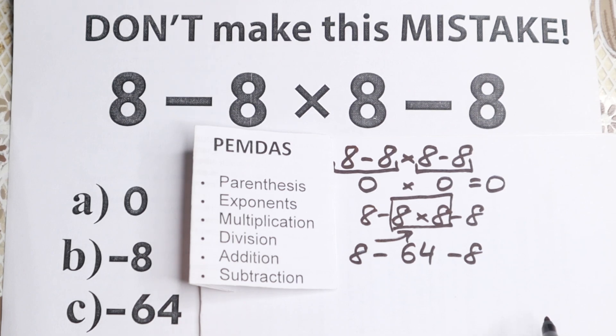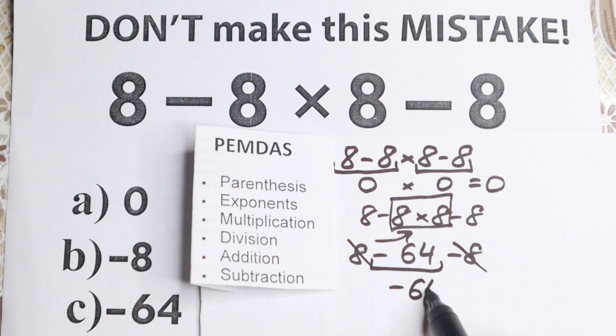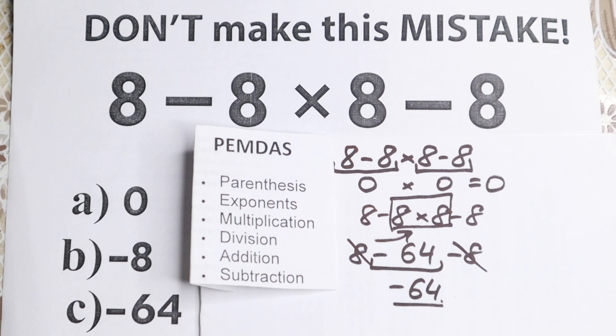And right now if you know a little bit about math you can easily cancel this, because 8 and minus 8 we can cancel this equals 0. And what we still have right here? We still have minus 64, which is our answer according to PEMDAS order and this is the correct answer.